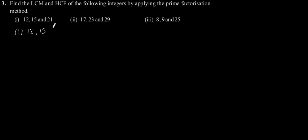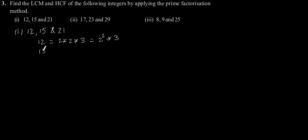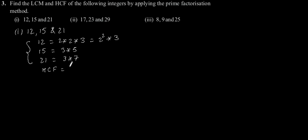First part: 12, 15, and 21. 12 can be expressed as 2 × 2 × 3, which can also be written as 2² × 3. 15 can be expressed as 3 × 5. 21 can be expressed as 3 × 7. From this, we can say that the common factor — that is, the highest common factor — is 3.